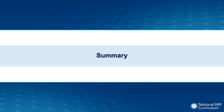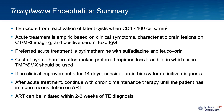Here is a summary of key points: Toxoencephalitis occurs from reactivation of latent cysts when the CD4 count drops to less than 100. Acute treatment is empiric, based on clinical symptoms, characteristic brain lesions on CT or MRI imaging, and positive serum toxo IgG. The preferred acute treatment is pyrimethamine combined with sulfadiazine and leucovorin. If pyrimethamine is not available, use trimethoprim sulfamethoxazole. If there is no clinical improvement after 14 days, consider a brain biopsy for definitive diagnosis. Acute treatment should be continued for a minimum of six weeks, followed by chronic maintenance therapy until immune reconstitution on antiretroviral therapy. ART can be initiated within two to three weeks of the toxoencephalitis diagnosis.